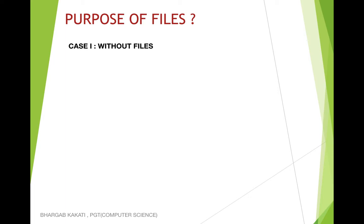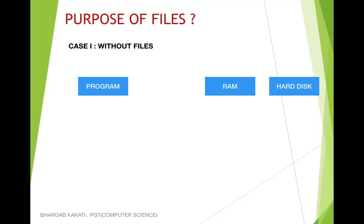Let's go through Case 1 — without files. In a program there are basically three parts: first we have the program, secondly we have RAM where data is temporarily stored, and thirdly we have the hard disk where data is stored permanently. You have already learned about RAM, program, and hard disk in your class 11 syllabus. When you write a Python program and run it, the output is stored in RAM temporarily — only while the program is executing. After you press stop or run a different program, the previous program leaves RAM, and you cannot view that output again.